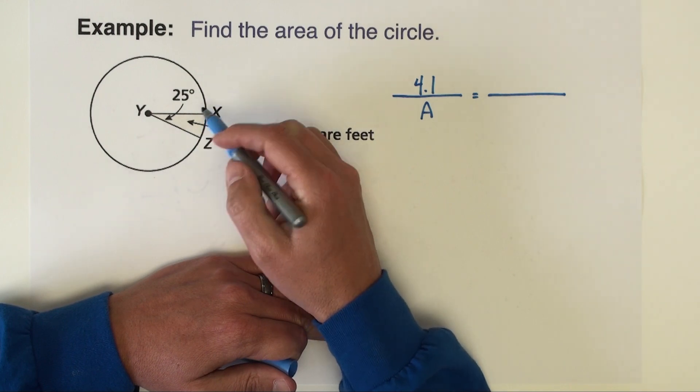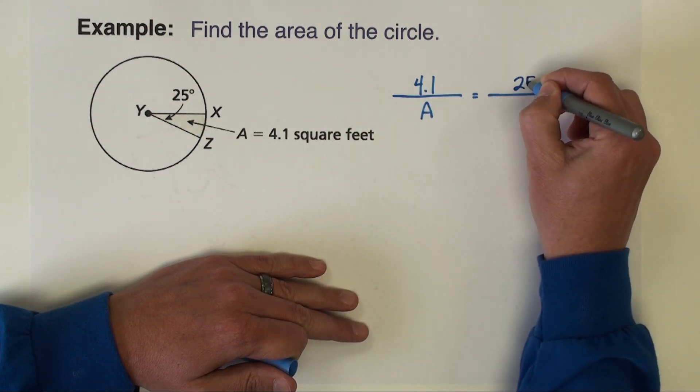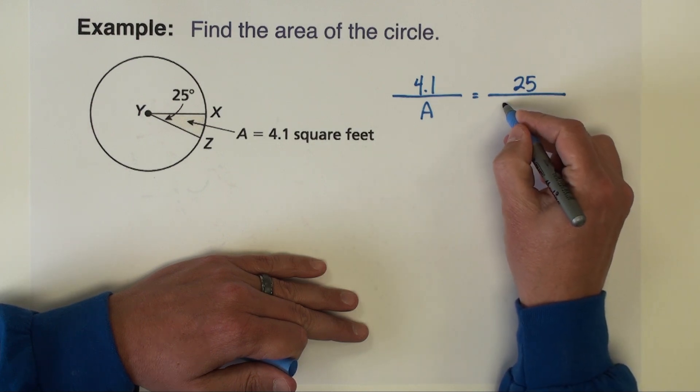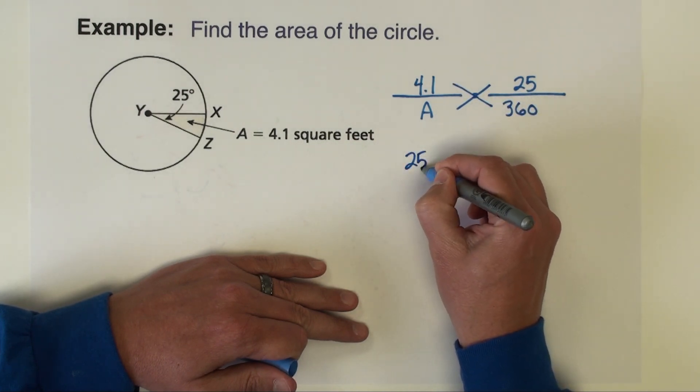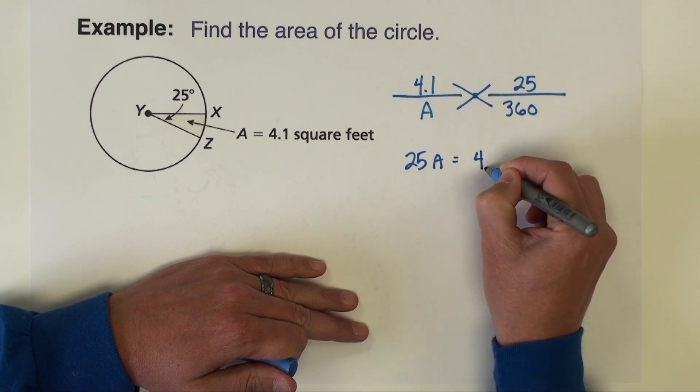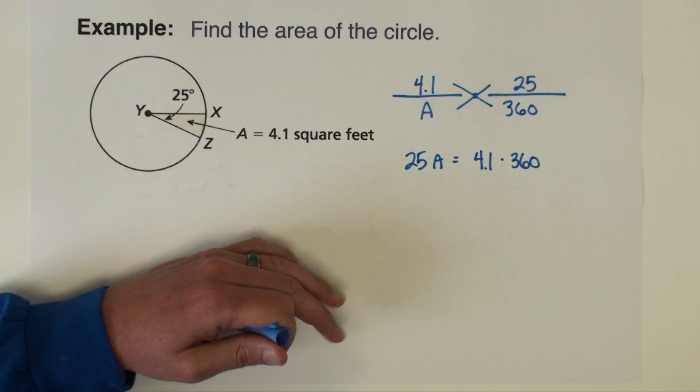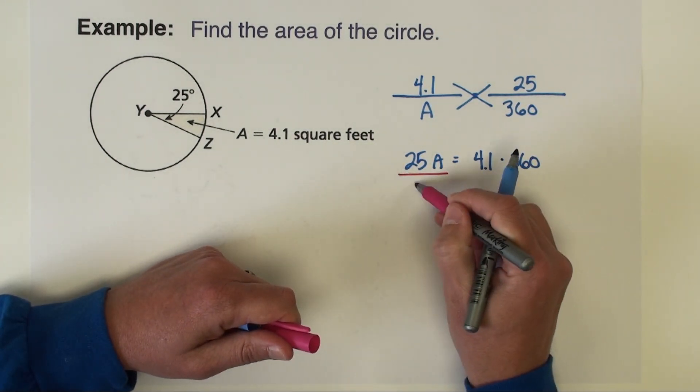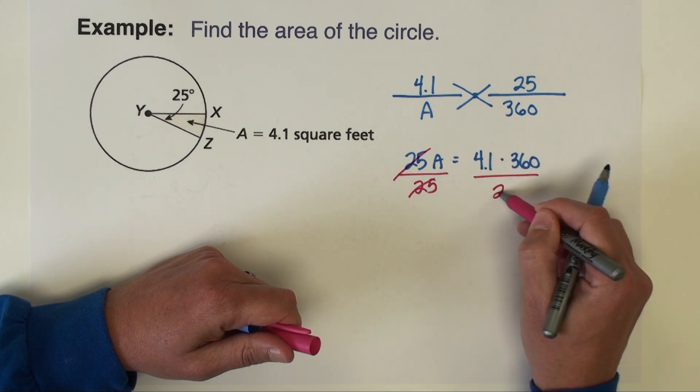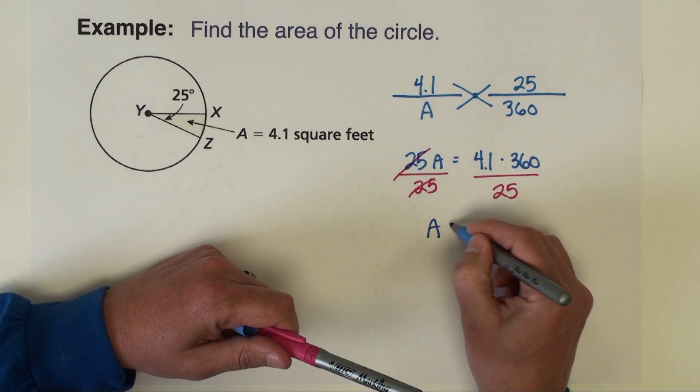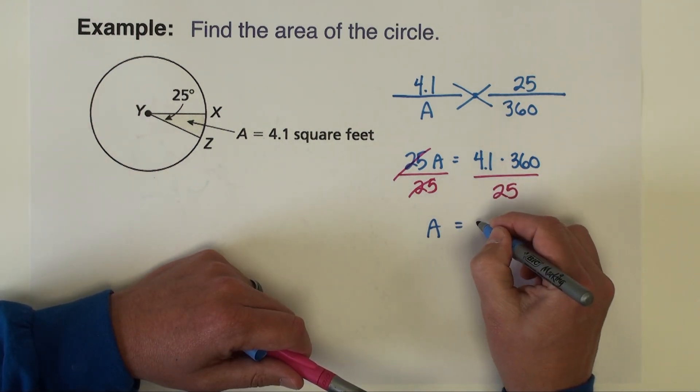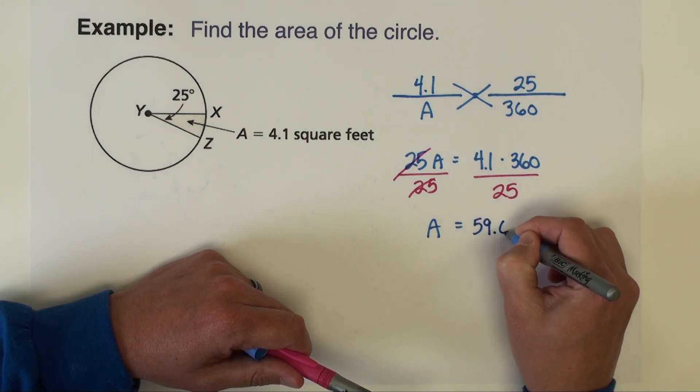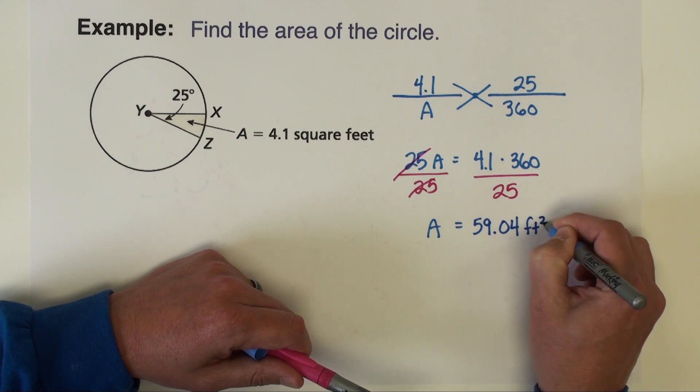This ratio is going to be degrees. So this tiny little slice is formed by this 25 degree angle, so that's going to be the numerator. That's the part, that's the small piece. And the entire circle is 360. Let's do a cross product. So we have 25A equals 4.1 times 360. We're going to divide both sides by 25. So the area is going to be 4.1 times 360 divided by 25, which is 59.04. Units are square feet.